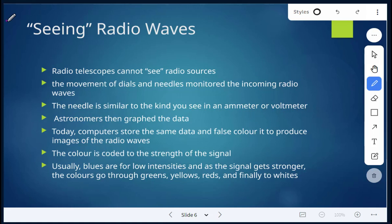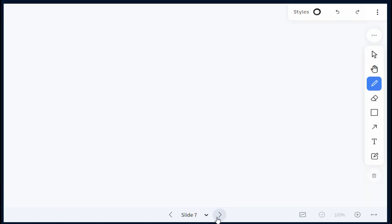So then the astronomers will graph that data. Today we have computers that store that data and then they will false color it to produce images of the radio waves. And that color is coded to the strength of the signal. So blues are usually used for low intensities, and then the signal as it gets stronger, those colors will go to greens, yellows, reds, and then whites.